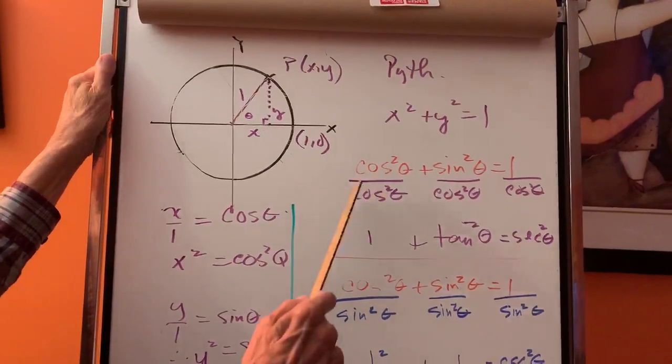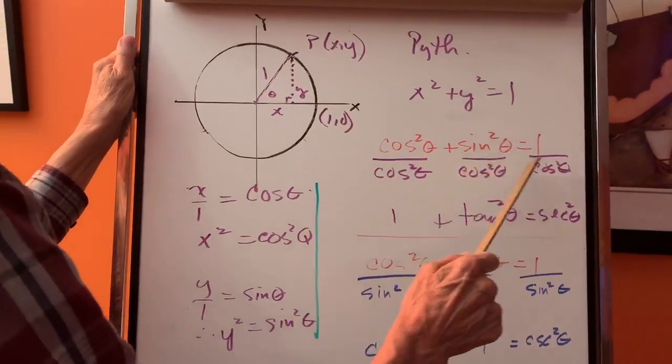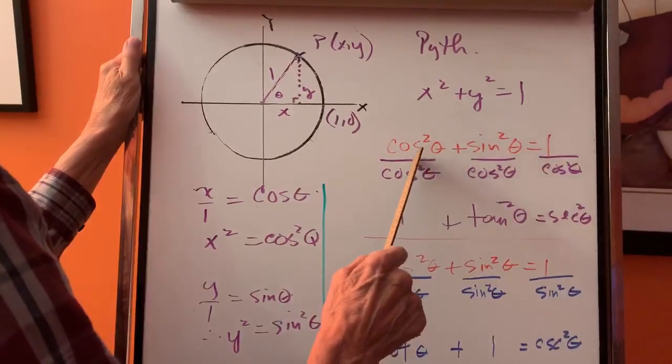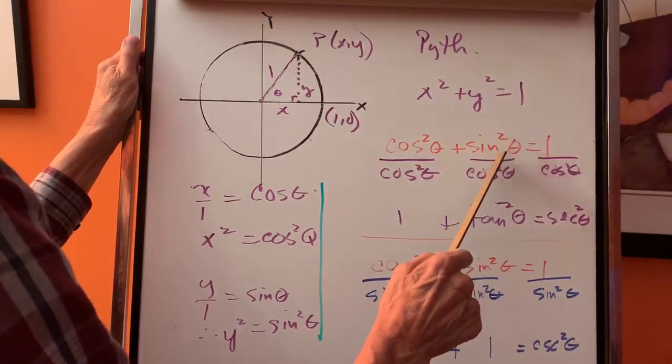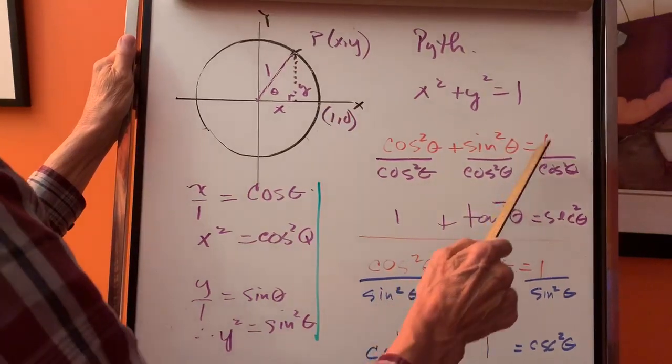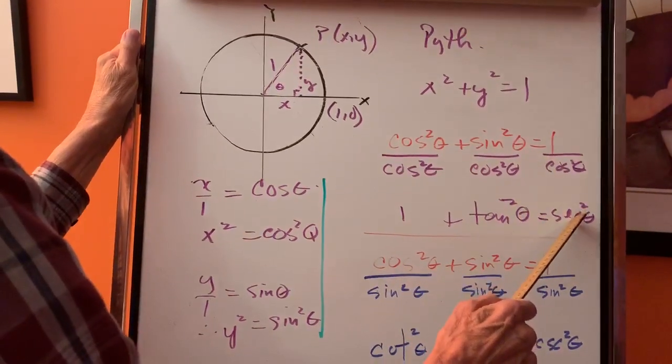Let's divide each term by cos squared. This equals one. Sine over cos is tangent, but sine squared over cos squared is tan squared, and one over cos is secant squared.